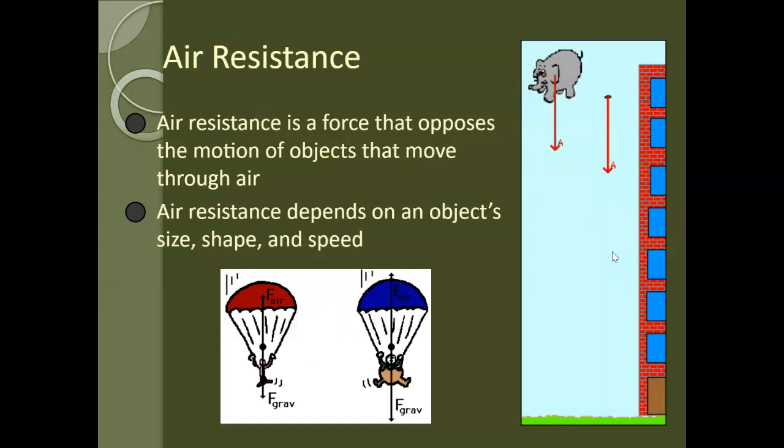Another form of resistance is air resistance. This is a force that opposes the motion of an object that moves through the air. And this is dependent on an object's size, shape, and speed. So if we think about jumping out of an airplane, you jump out without a parachute, the effect of gravity is 9.8 meters per second squared. If you don't have anything to slow you down, you're going to hit the ground pretty hard. However, if you jump out with a parachute, that air resistance will slow you down. It will resist your motion. It will slow your velocity and then hopefully you can make it to the ground gently.